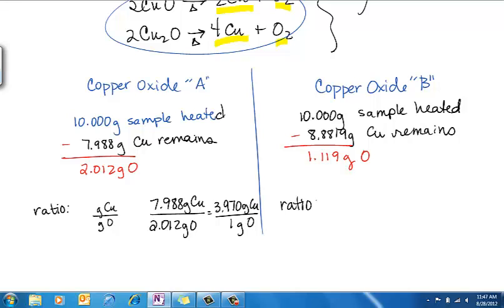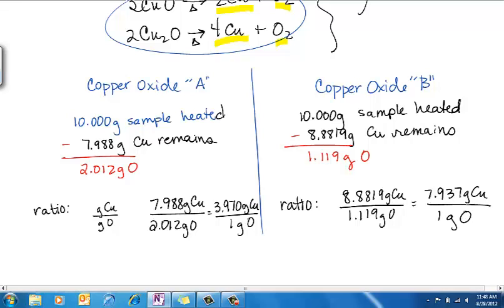If we make the same kind of ratio for copper oxide B, we have 8.819 grams of copper for 1.119 grams of oxygen. We reduce that a little bit, 7.937 grams of copper for every gram of oxygen.